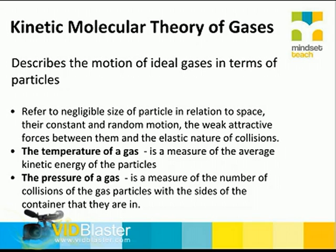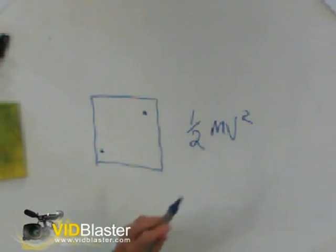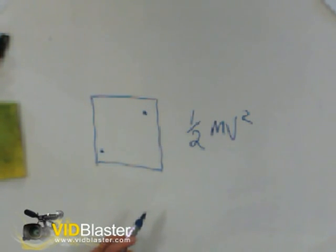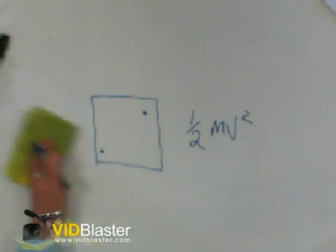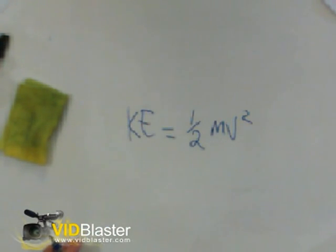Any gas that's close to becoming a liquid would not be ideal. You would introduce it at the beginning so you can constantly contrast how an ideal gas performs versus how a real gas performs. The temperature of a gas is directly linked to how fast the particles are moving — kinetic energy is one-half mv squared — so the faster the gas particles are moving, the higher the kinetic energy. When we heat up a gas, the particles move faster.